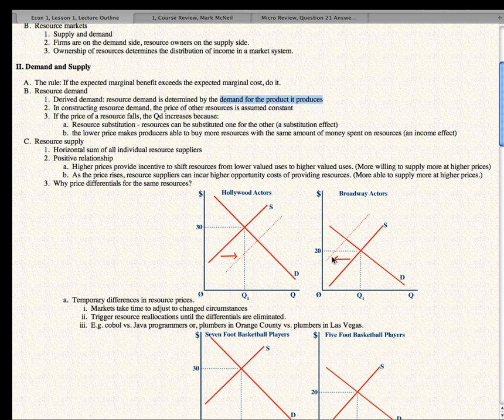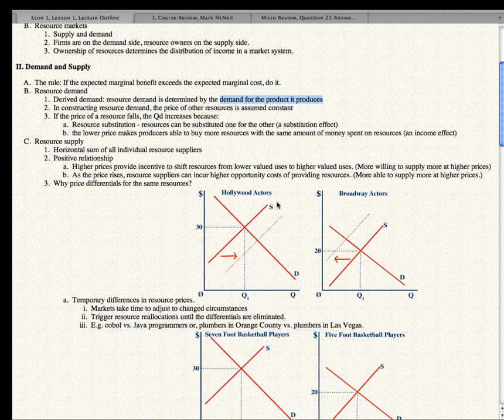Anyway, supply and demand. There is a supply, and who's on the supply side? Resource owners, and in the case of labor, it's the workers that are on the supply side. And on the demand side are employers or producers. They demand the resources. Now, resource supply is the horizontal sum of all individual resource suppliers. So it's a normal market in that respect. And there's a positive relationship between price and quantity supplied. As the price of the resource goes up, more will be produced and offered for sale or just offered for sale in the markets.